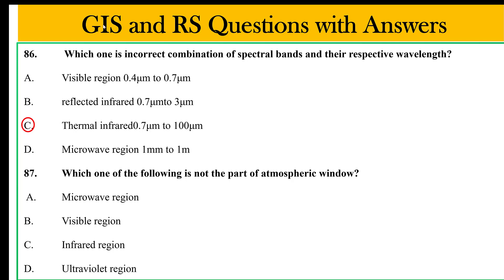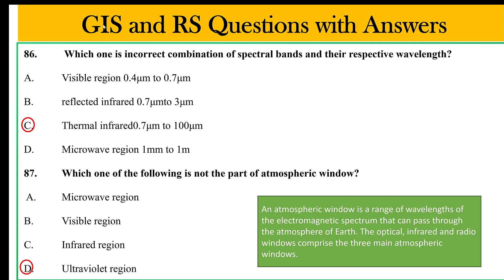Which one of the following is part of the atmospheric window? Options include: part of the microwave region, visible region, infrared region, and ultraviolet region. UV is the ultraviolet region. The atmospheric window is the range of electromagnetic spectrum waves that can pass through the atmosphere. The three main atmospheric windows are optical, infrared, and radio windows.